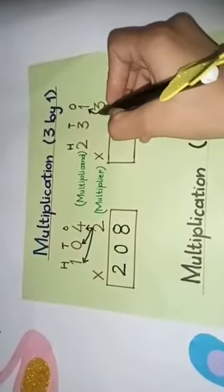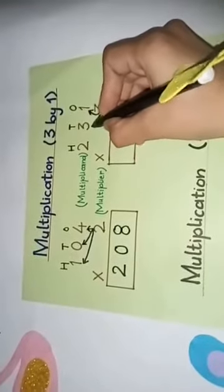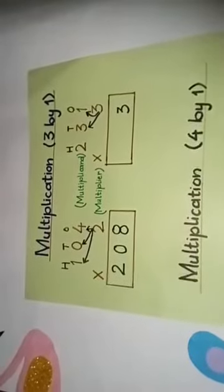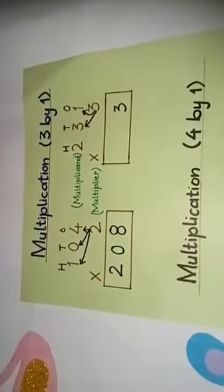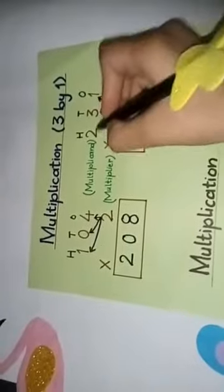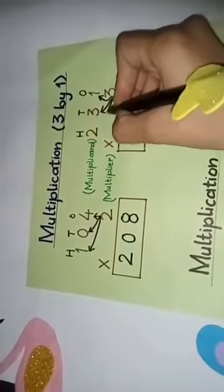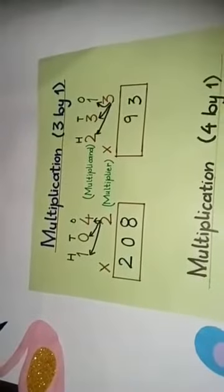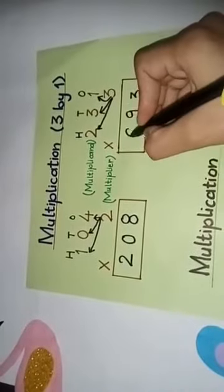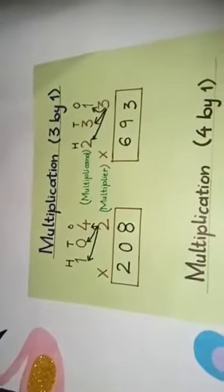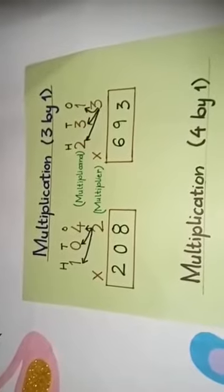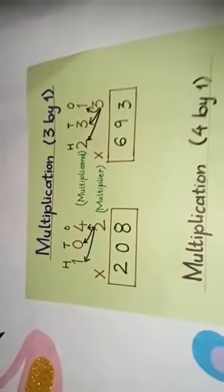And now 3 will be multiplied with 3. Ab ham 3 ko 3 ke saath multiply karenge — exactly, 3 threes are 9. Now 3 will be multiplied with 2 — 3 twos are 6, very good, excellent. So the answer is 693.